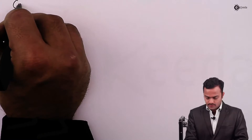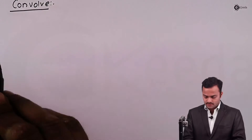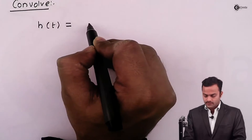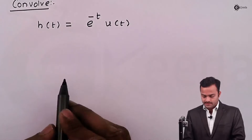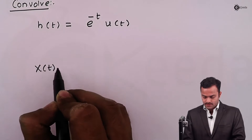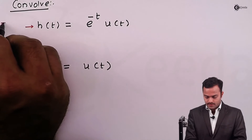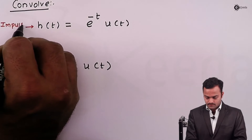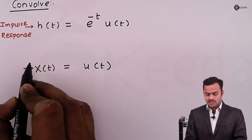Hello students. In this video we are going to see a problem based on continuous time convolution. We have to convolve two signals: one is the impulse response h(t) = e^(-t) * u(t), and the second signal is the input x(t) = u(t), the unit step function. So h is the impulse response and x is the input signal.